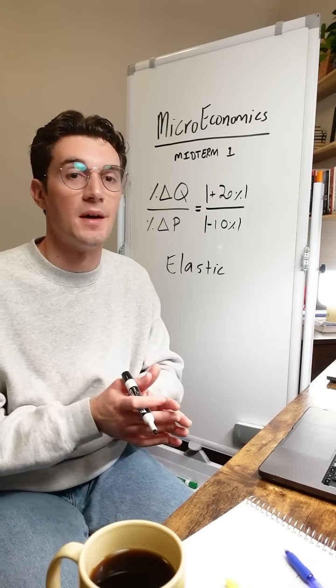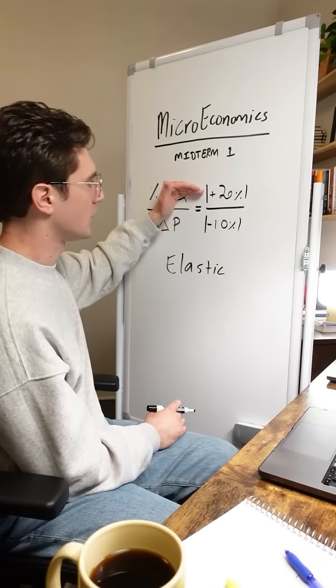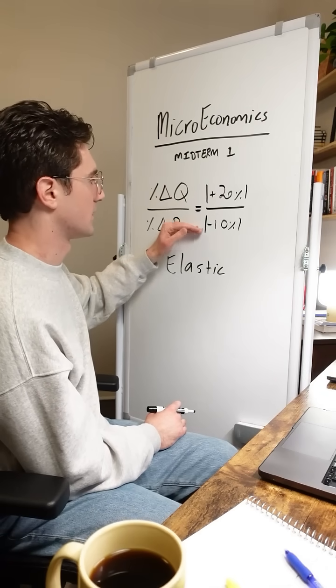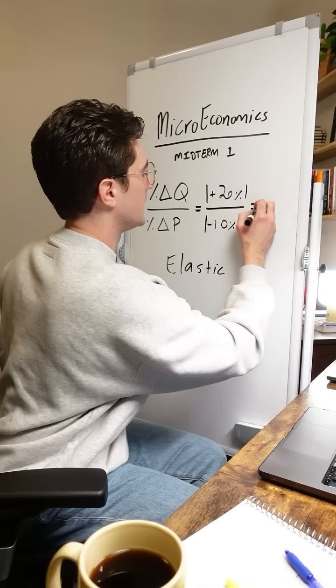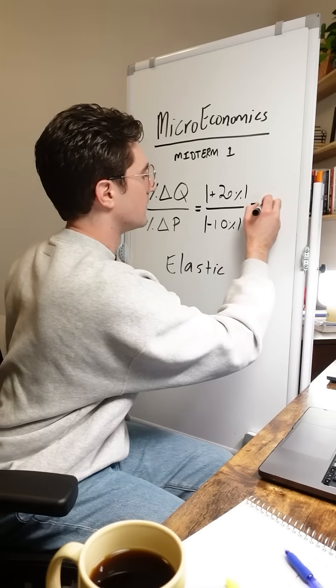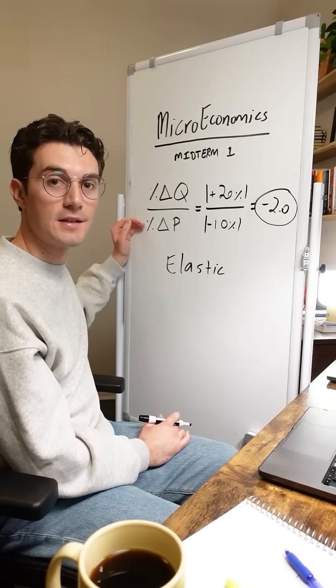Even when you're using the midpoint method, we're still solving for the same underlying problem: Did quantity change by more or less than price? And skipping ahead a little bit, if we want to solve this out, we get a price elasticity value of negative 2.0. This means that with a 1% increase in price, quantity demanded is decreasing by 2%.